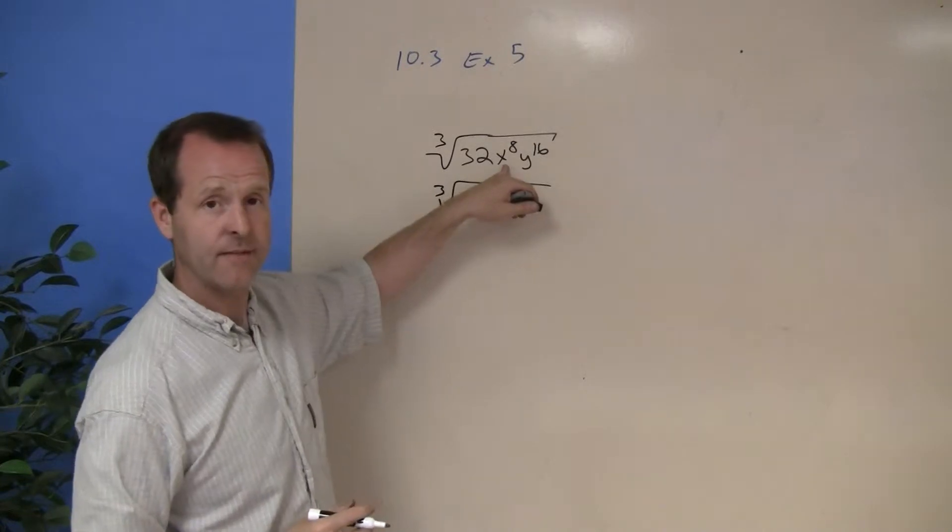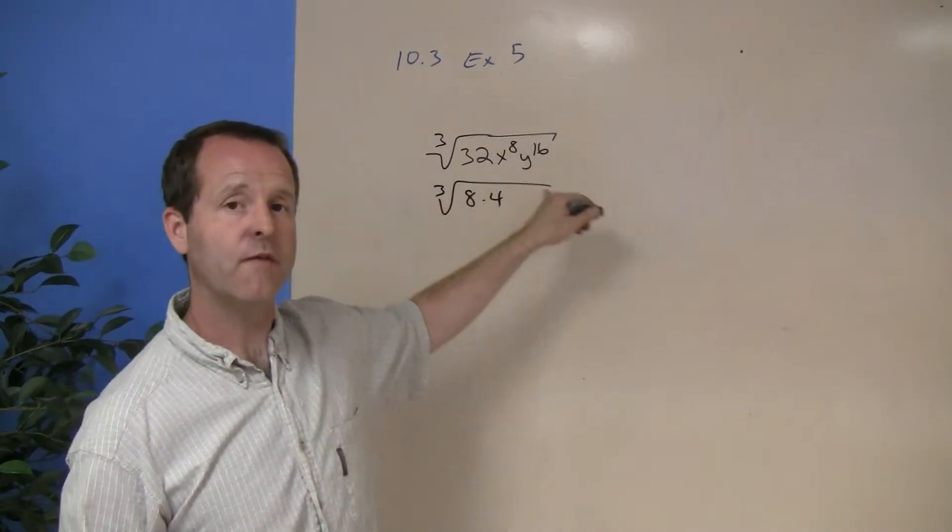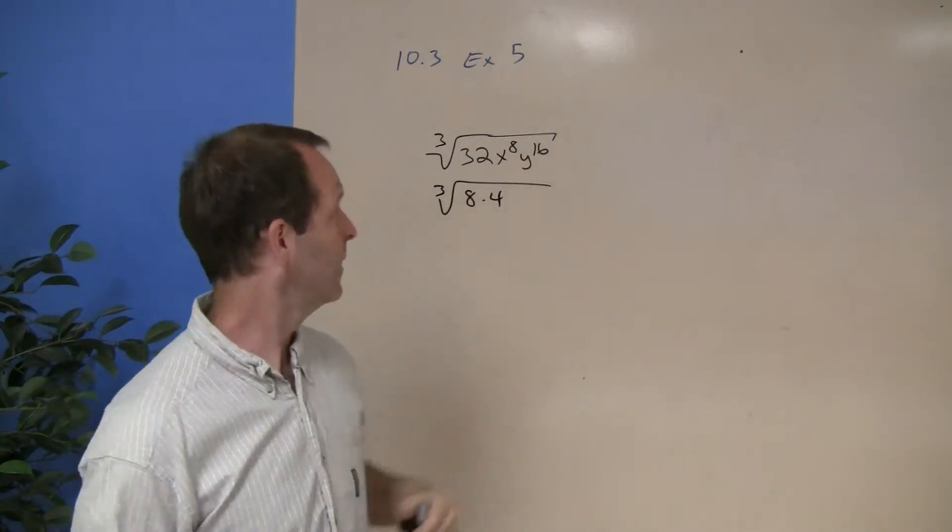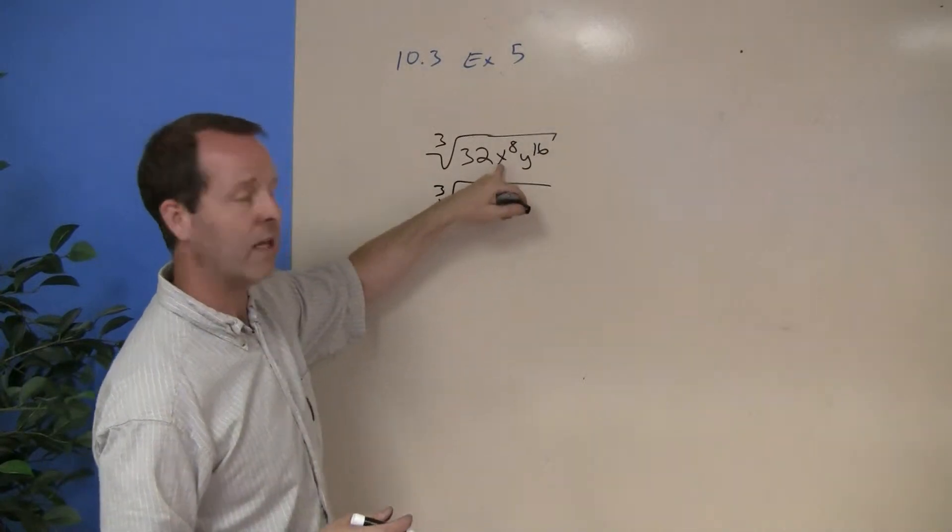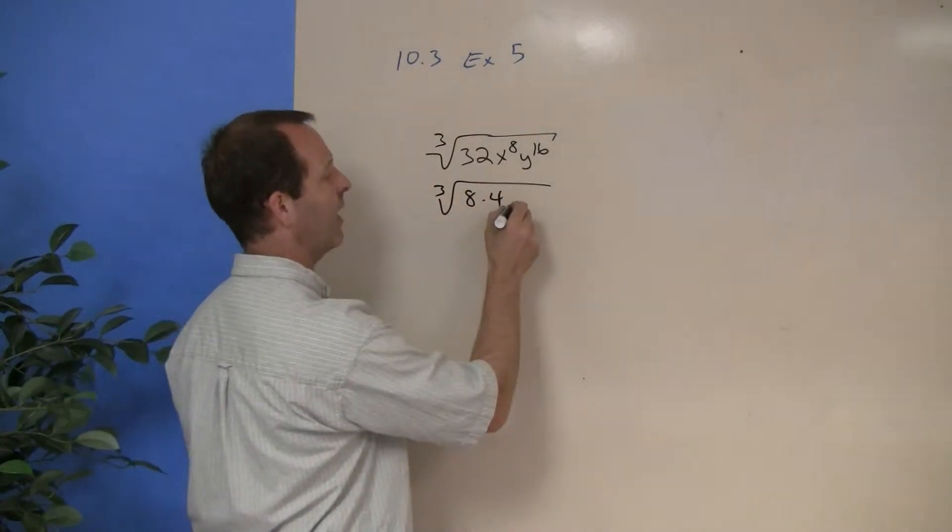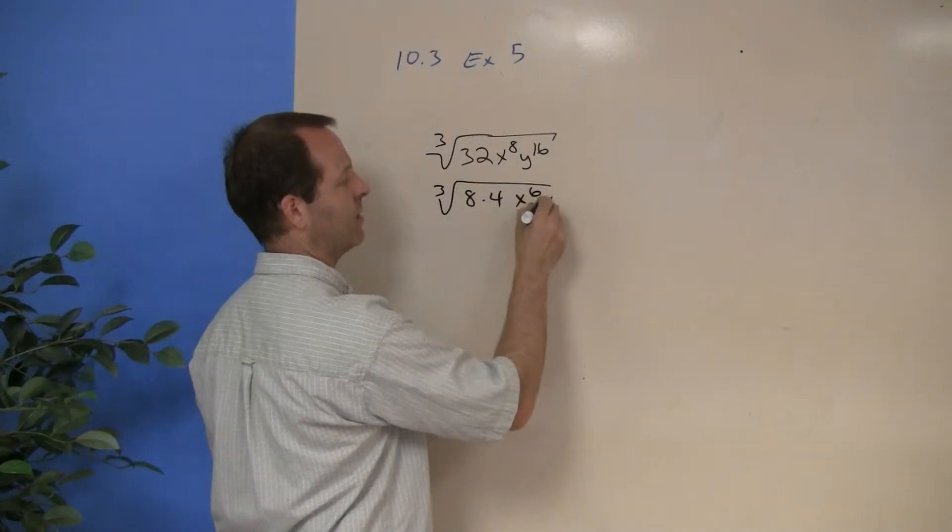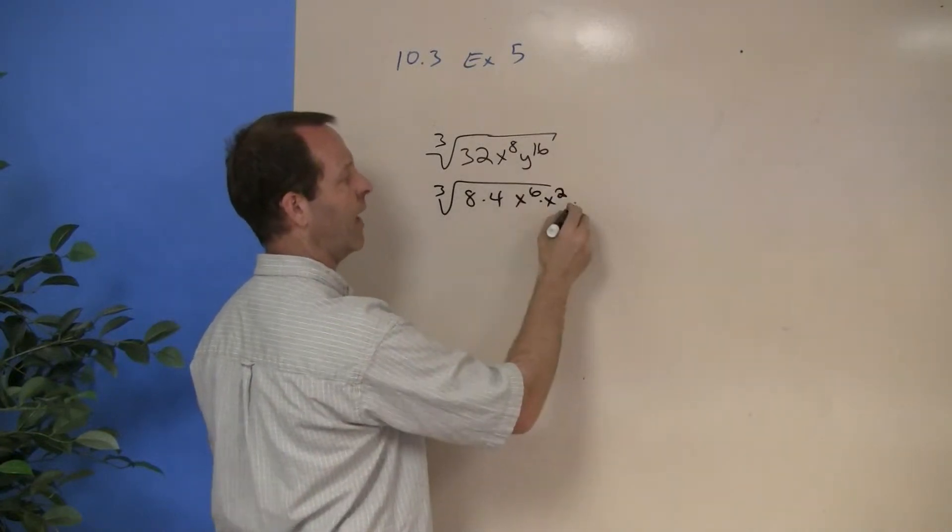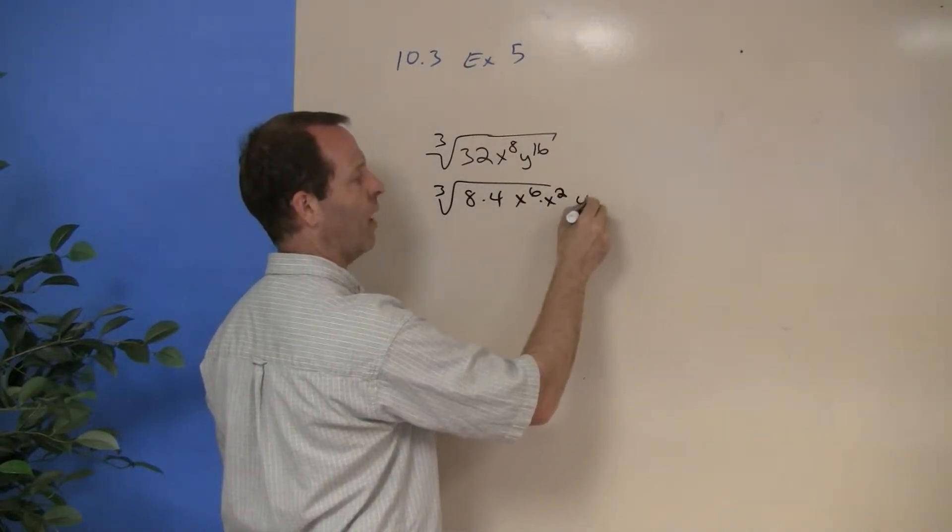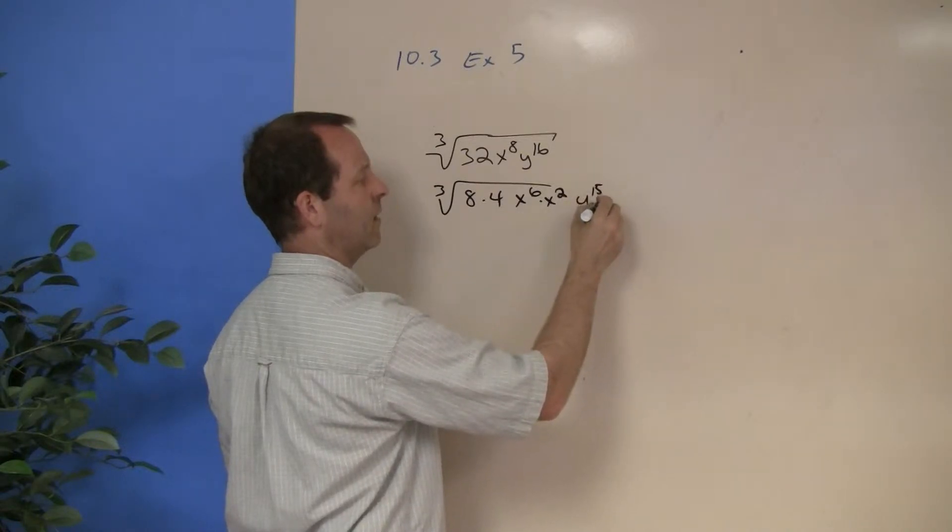The x to the 8th, what is its highest perfect cube that's involved in there? And the way to look at it is I want to look at multiples of 3. So I'm going to have an x to the 6th times an x squared. And then the y to the 16th, what I'm going to have is a y to the 15th times a y.